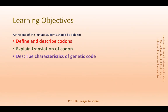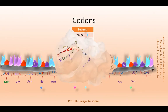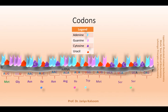The genetic code is a dictionary that identifies the cross-talk between the sequence of nucleotides and the sequence of amino acids in the proteins. Each individual word in the genetic code is called a codon. It is composed of three nucleotide bases, so we can say that the genetic words are codons.